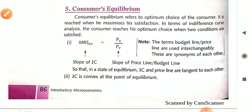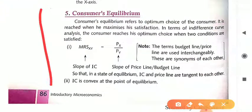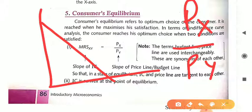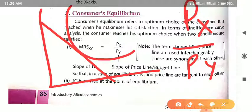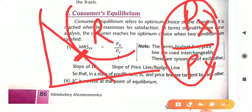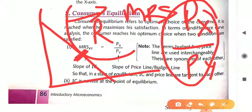We can see this condition with the help of a simple diagram. Suppose this is the graph. In this graph, this is our budget line. The formula of the slope of the budget line is PX upon PY. When the slope of this budget line is equal to the slope of the Indifference Curve, the point where they both meet is point R. Point R is the point where the slope of the budget line, PX upon PY, is equal to the slope of the Indifference Curve, which is MRS — marginal rate of substitution. Then the slope of the budget line equals the slope of the Indifference Curve, and we can say a consumer is at a point of equilibrium.